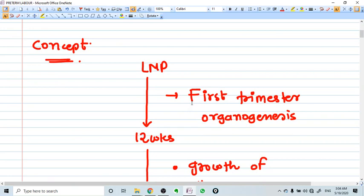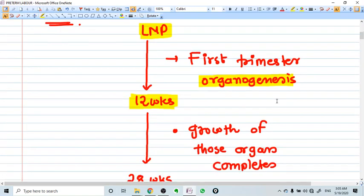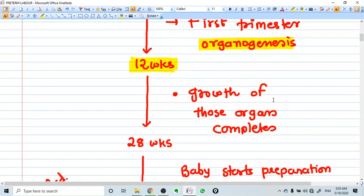Now the concept of preterm labor, let's start from the last menstrual period. Up to 12 weeks, there is a first trimester in which organogenesis happens. Almost all organogenesis has been completed by the end of the first trimester. In the second trimester, till 28 weeks, growth of these developed organs becomes complete, almost complete at 28 weeks.